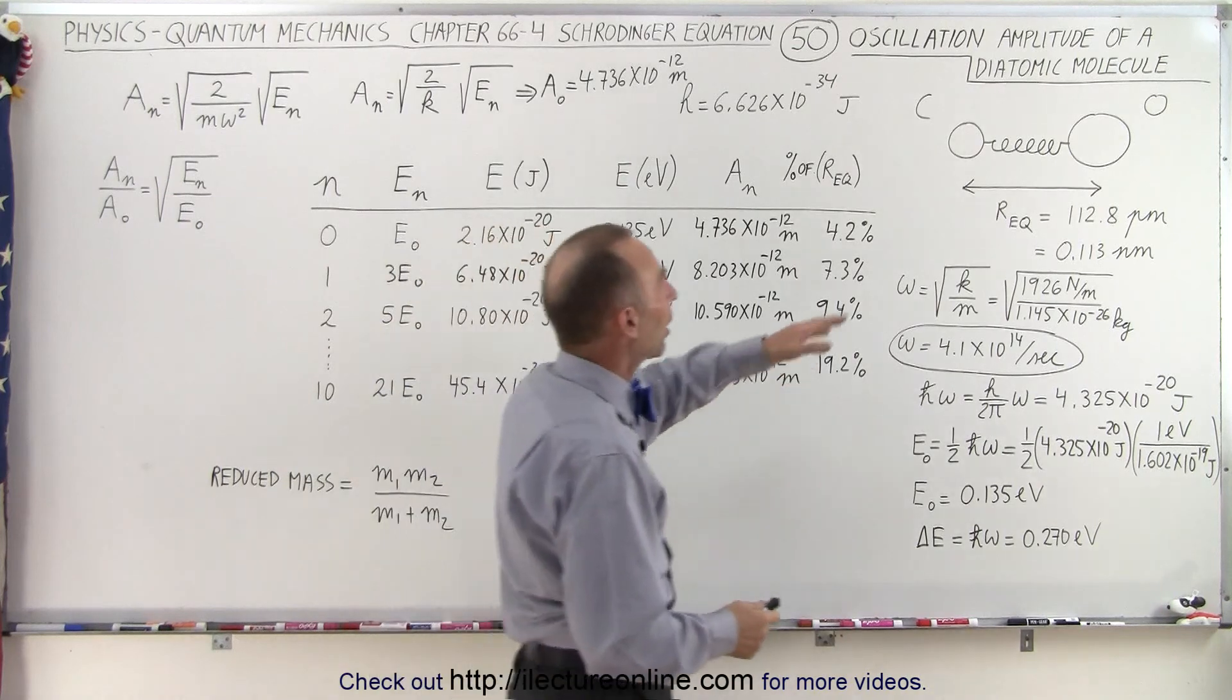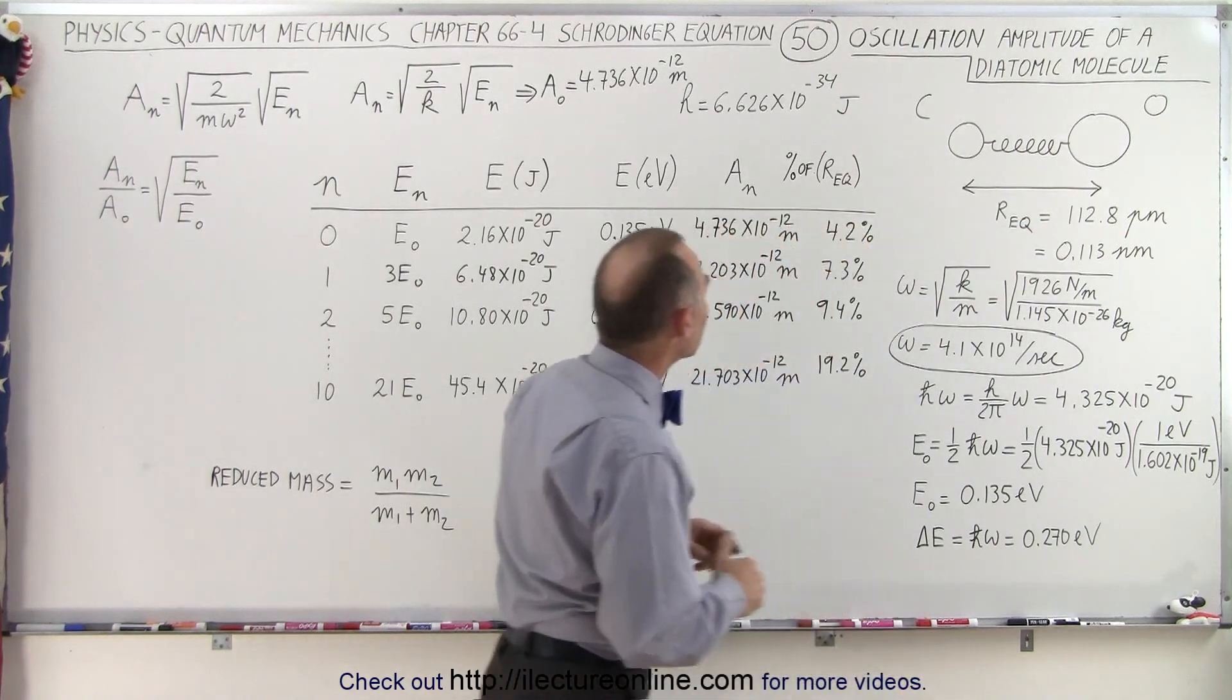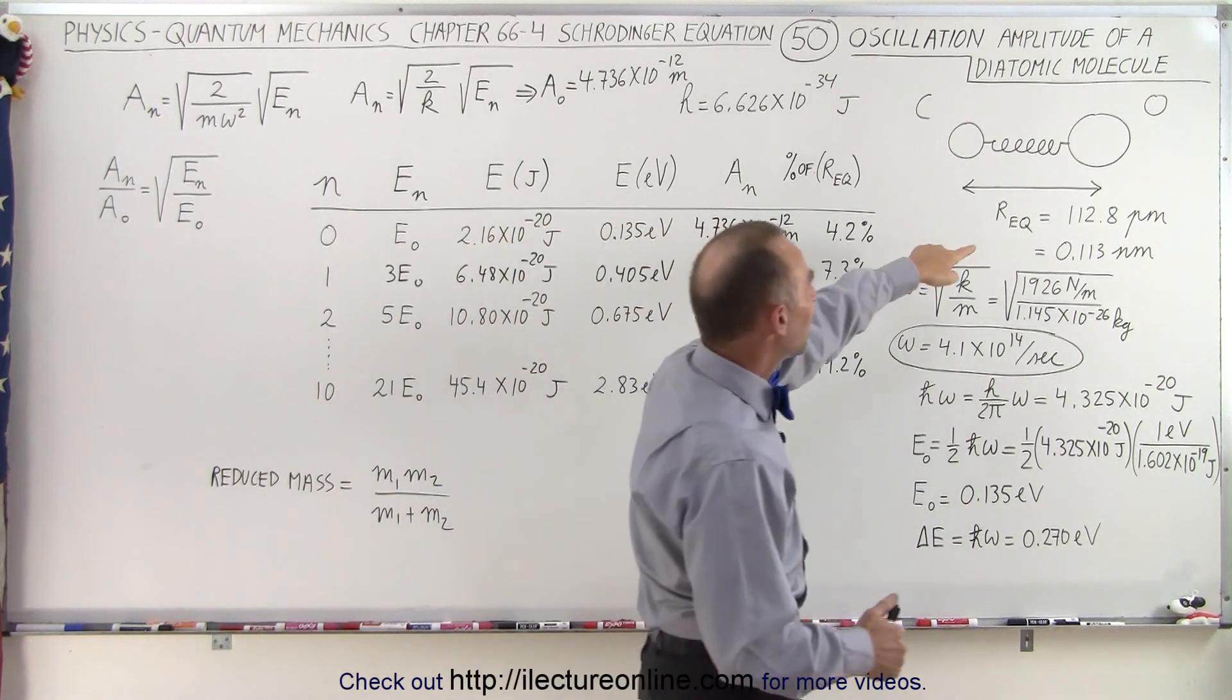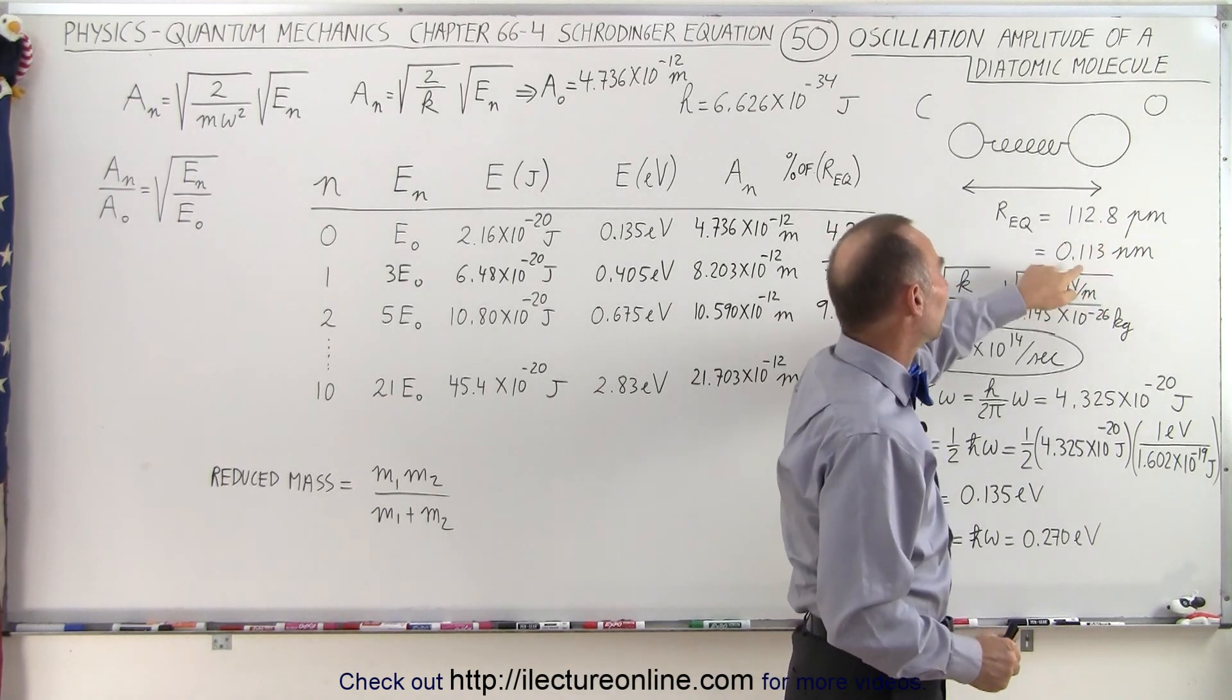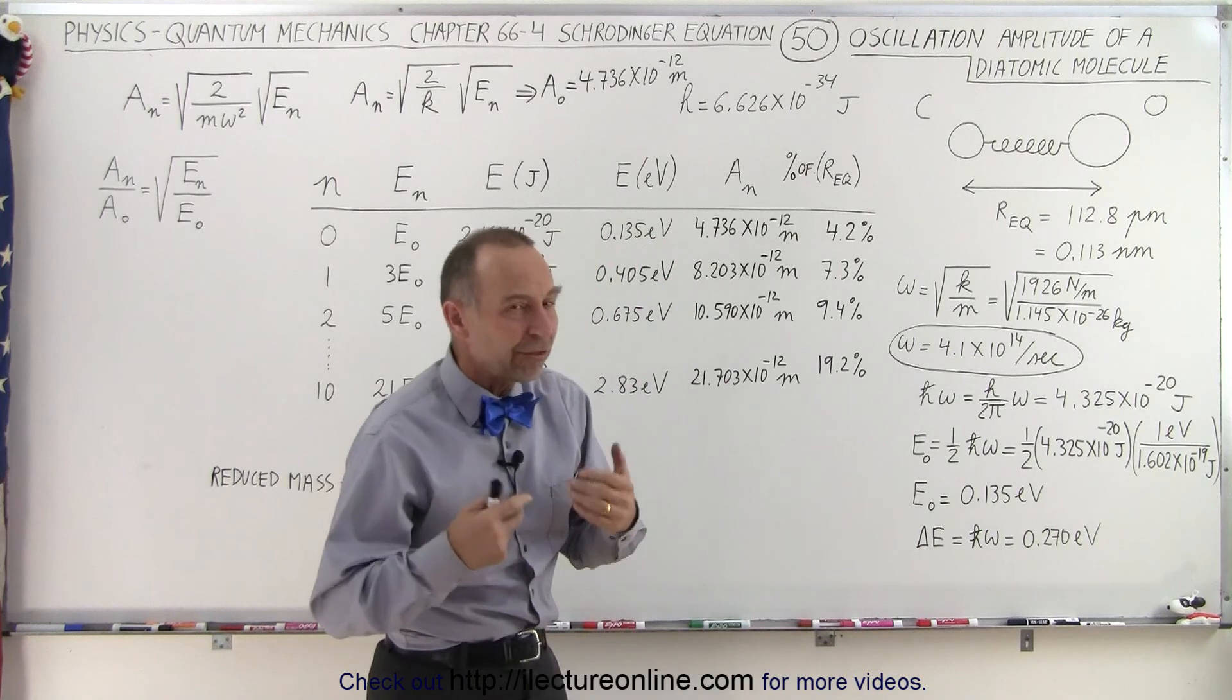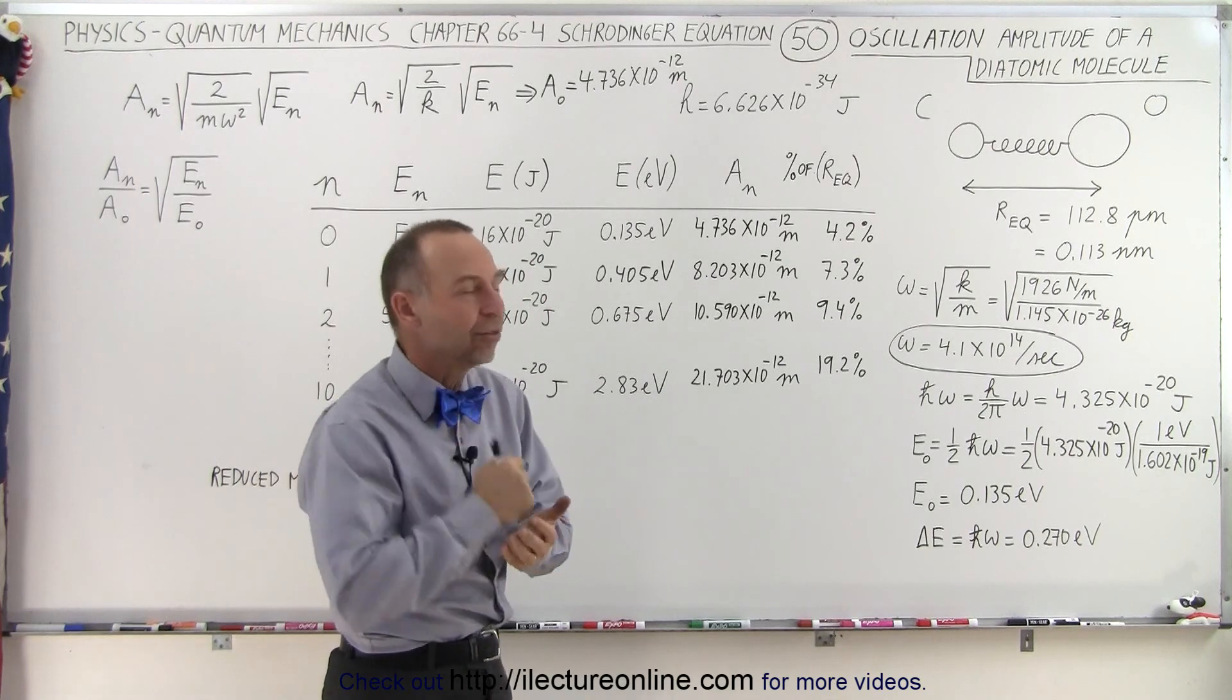For that let's take again the carbon monoxide molecule that has one carbon atom and one oxygen atom. The bond length between the two, written down here, that would be the equilibrium position if it was not vibrated, is 112.8 picometers which is 0.113 nanometers. So let's find out what the amplitude is when that molecule begins to oscillate as it receives energy.